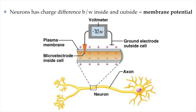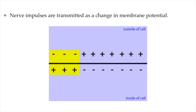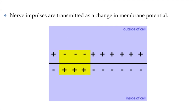So let's start there. That is our baseline: a negative 70 millivolts charge difference between the inside of a neuron versus the outside. We call that the membrane potential. Nerve impulses are essentially transmitted as a change in membrane potential. As a nerve impulse moves along the axon of a neuron, the membrane potential changes so that wherever the impulse is moving, the inside of the cell is briefly positive compared to the outside. That's what a nerve impulse is — it's a change in membrane potential.